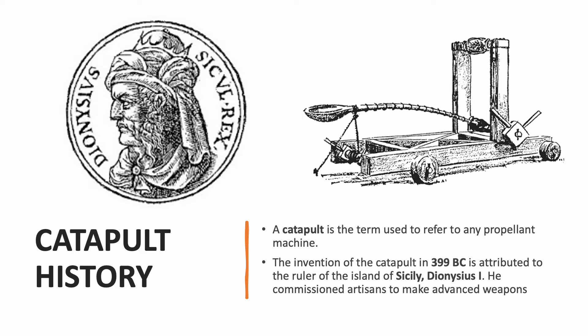Catapults use weights and levers to send rocks or other things into the air. They do not throw as far as modern weapons do and are not useful in modern warfare. Catapults were common in the past, especially the Middle Ages. The invention of the catapult in 399 BC is attributed to the ruler of the island of Sicily, Dionysius I.